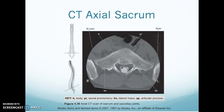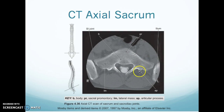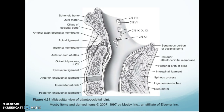This is a CT of the sacrum showing the body, sacral promontory, articular process, lateral mass, and SI joint. We'll stop there and pick up on the next video at this point.